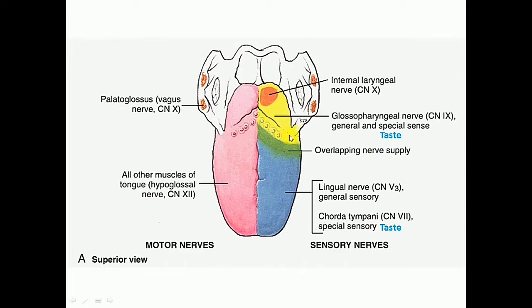The posterior one-third of the tongue is supplied by the glossopharyngeal nerve, which carries both general as well as taste sensation, including the circumvallate papillae. The posterior-most part of the tongue is supplied by the internal laryngeal branch of the superior laryngeal branch of the vagus nerve.